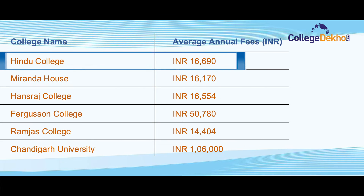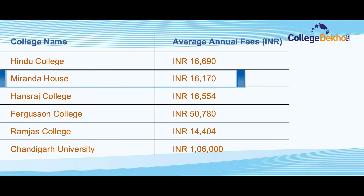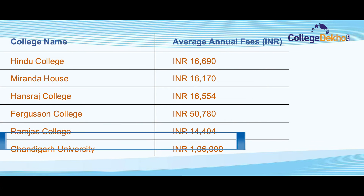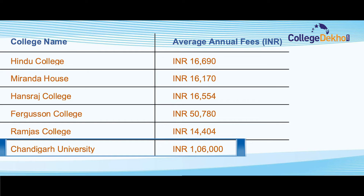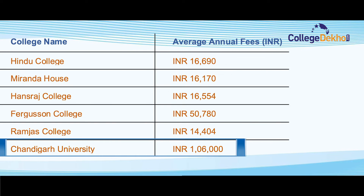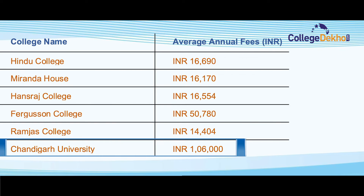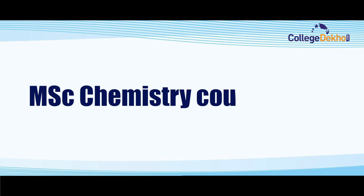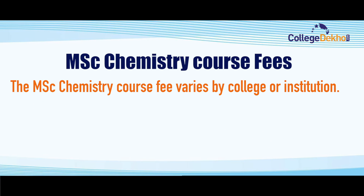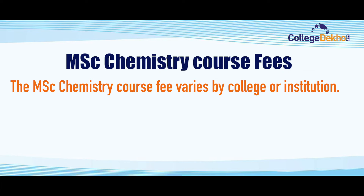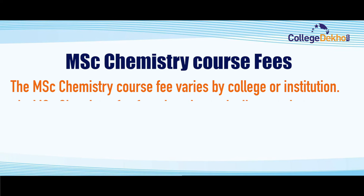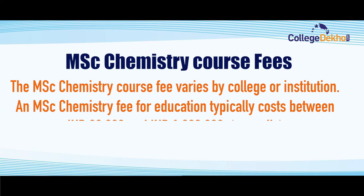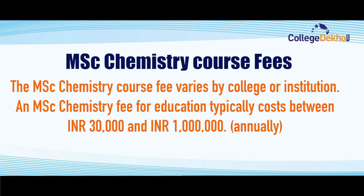Here is the list of some of the best MSc top colleges in India: Hindu College, Miranda House, Hans Raj College, Ferguson College, Ramjas College, and Chandigarh University. Their average annual fees range between 16,000 to 1 lakh 6,000. The MSc Chemistry course fee varies by college or institution, typically costing between 30,000 to 1 lakh annually.